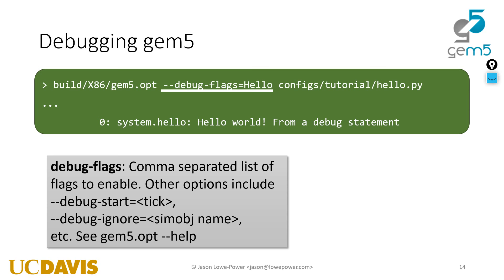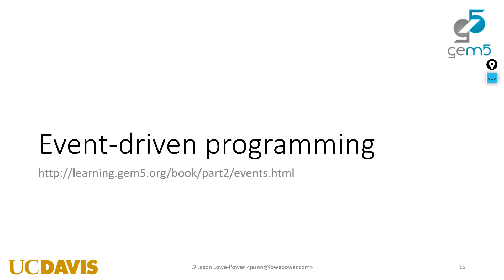Debug start is a really useful option — it says run for, say, a billion ticks and then start printing debug information. This is very useful if something goes wrong ten seconds into your simulation. You can also use debug ignore, which will print debug flags but ignore output from a specific named object — for instance, if you have two memory controllers you could have only one print debug flags.